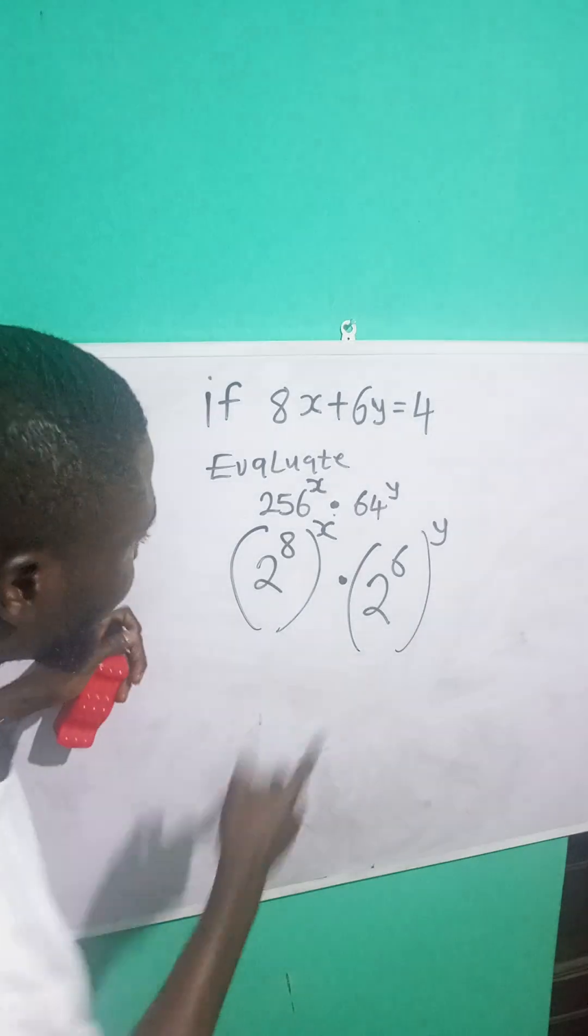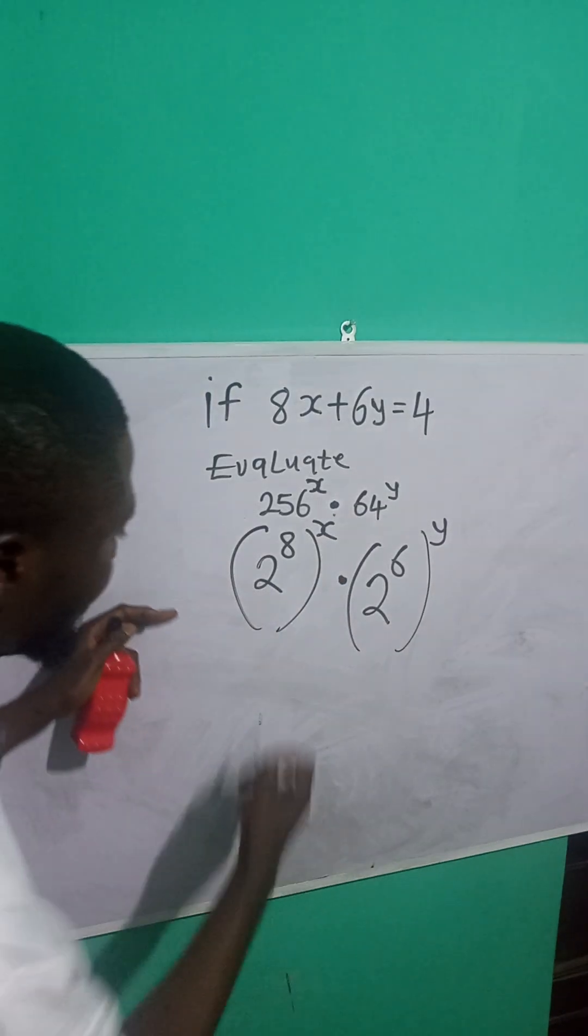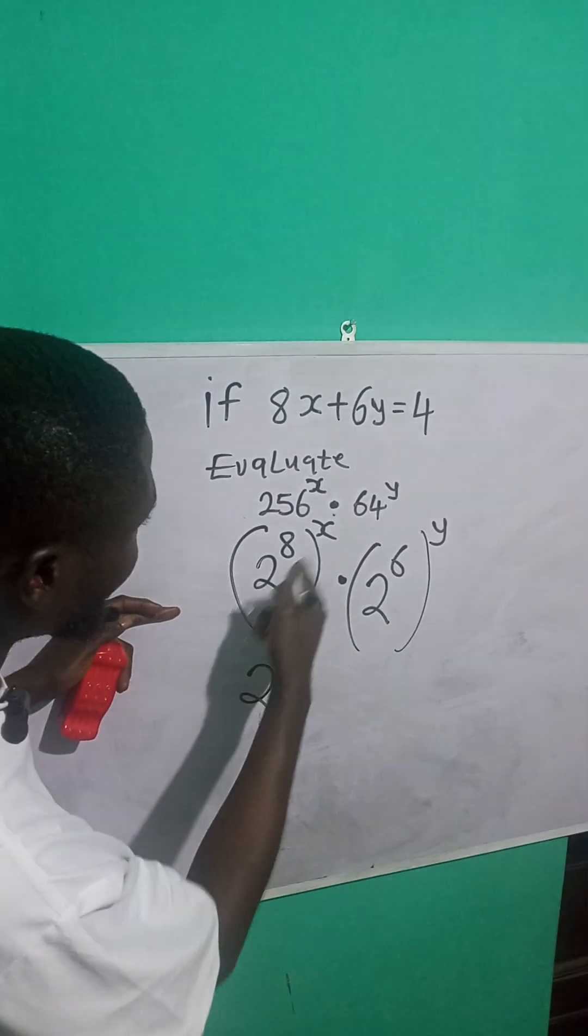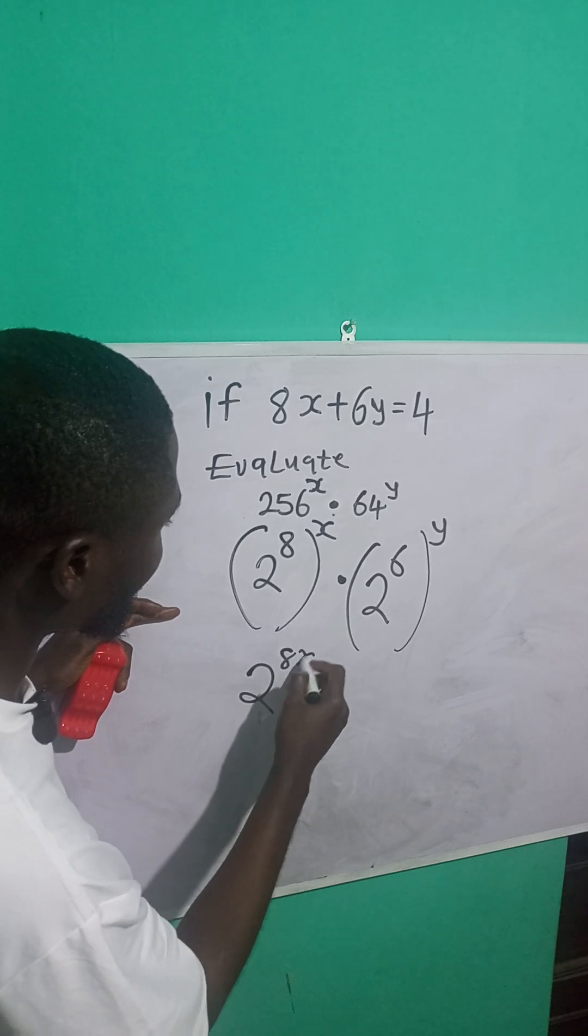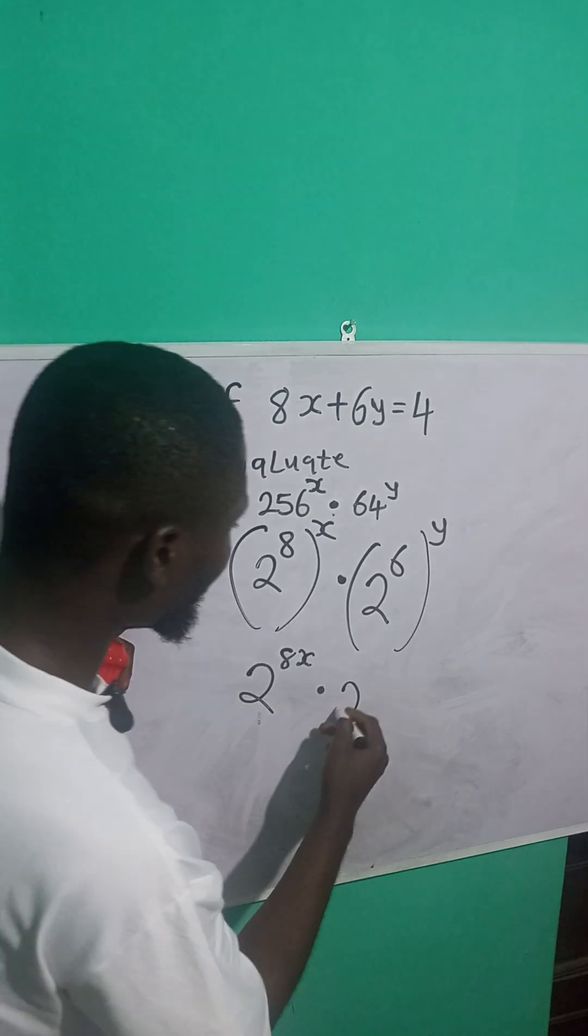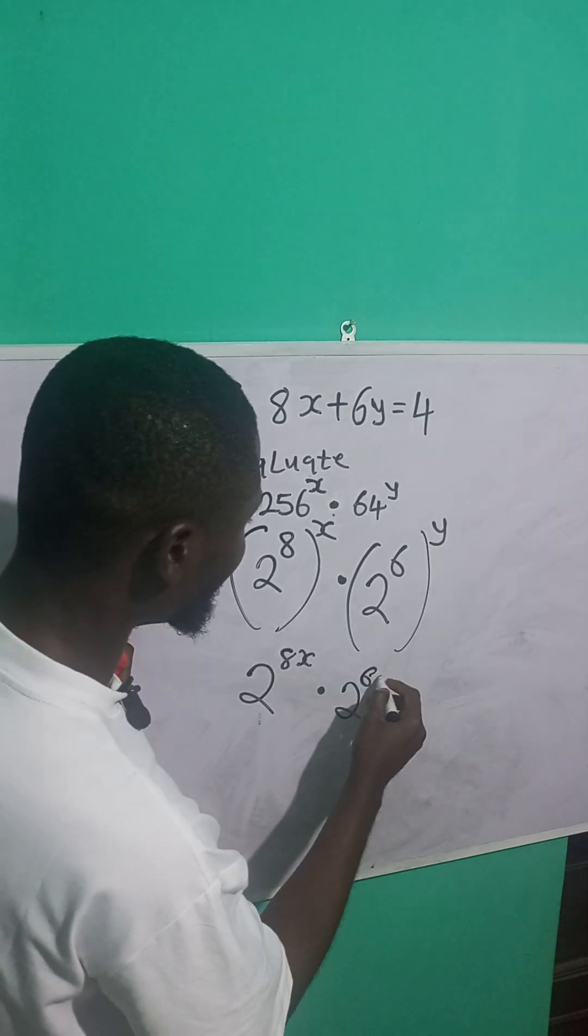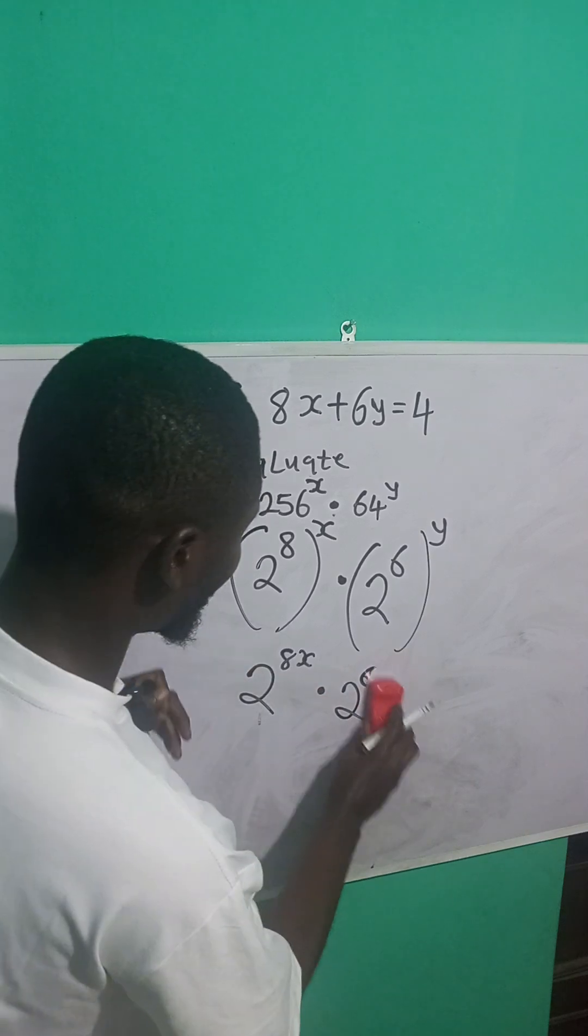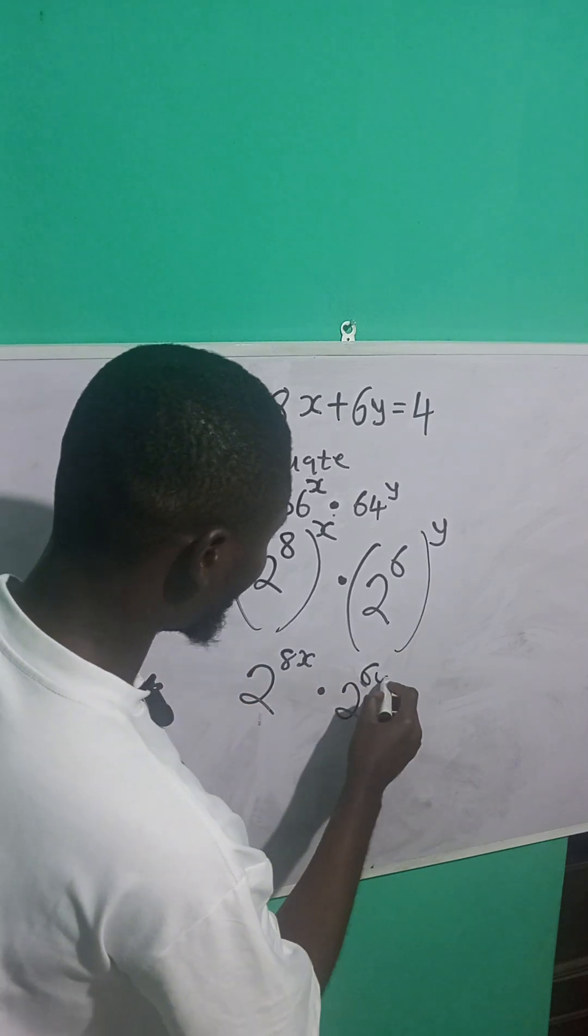Now remember that when you have multiple powers, you can just multiply the two powers together. So this is 2 raised to power 8 times x is what? 8x. Multiplied by what? 2 raised to power 6 times y is what? 6y, right?